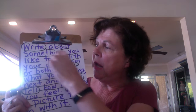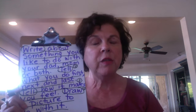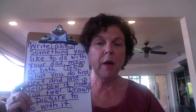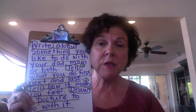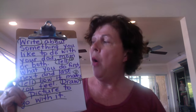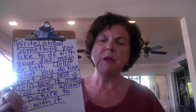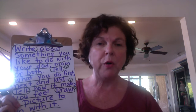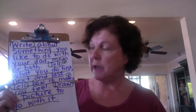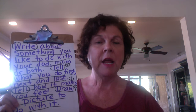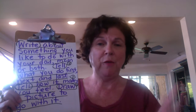It says write about something you like to do with your dad, mom, or both. Think in your head — what are some things you like to do with them? Maybe you like to read books with them, go on a bike ride, play a board game, or make a puzzle. Think about something you like to do. You could pick something about your dad like the boy in the book, or something with your mom, or maybe both. I think for mine I'm going to do both of my parents. Then it says tell what you do first, next, and last — telling the story in order. And then tell how it makes you feel. And then as always, we need to draw a picture to go with it.